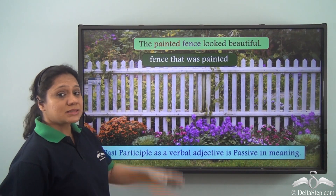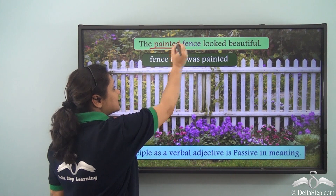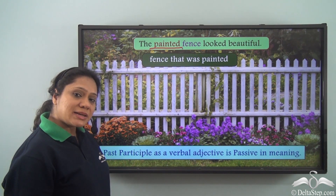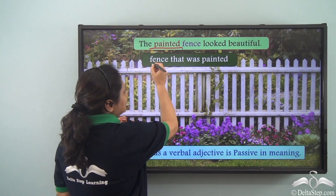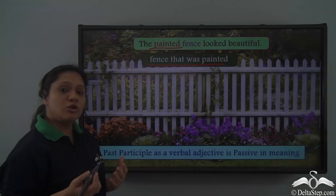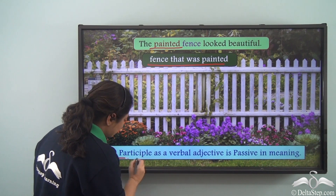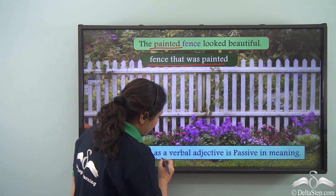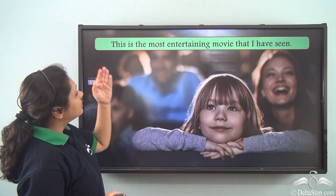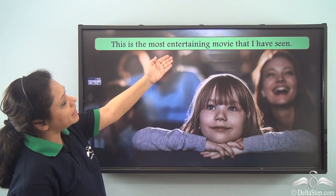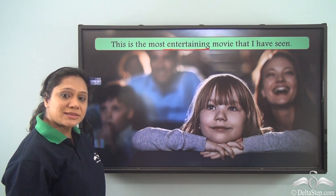Whereas in the sentence 'The painted fence looked beautiful,' 'painted' is the past participle acting as an adjective. When we say 'the painted fence' we mean the fence that was painted — the fence is the receiver of the action. Hence we can say that the past participle as a verbal adjective is passive in meaning.